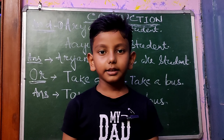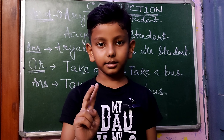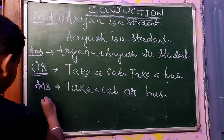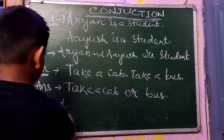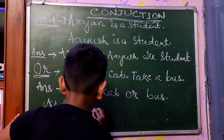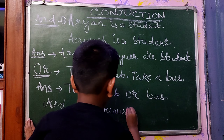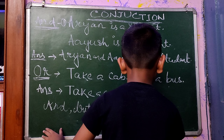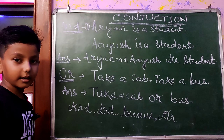Conjunction is a word that is used for joining two words or sentences. The four main commonly used conjunctions are: AND, BUT, BECAUSE, and OR. These are the four main commonly used conjunctions.